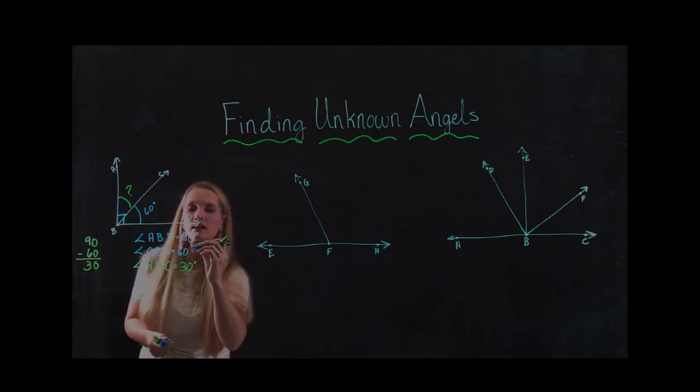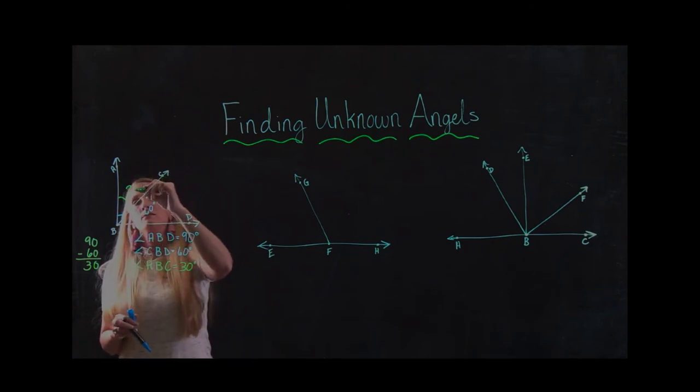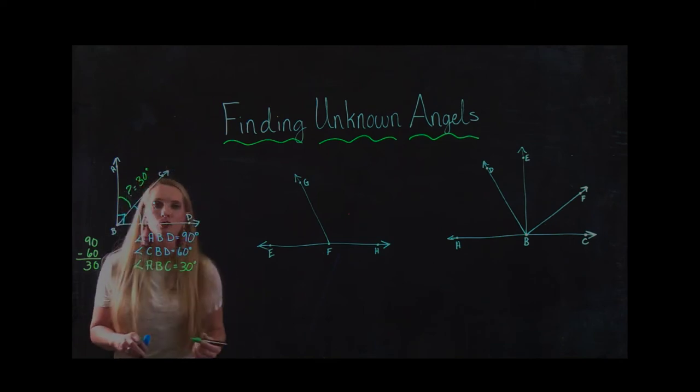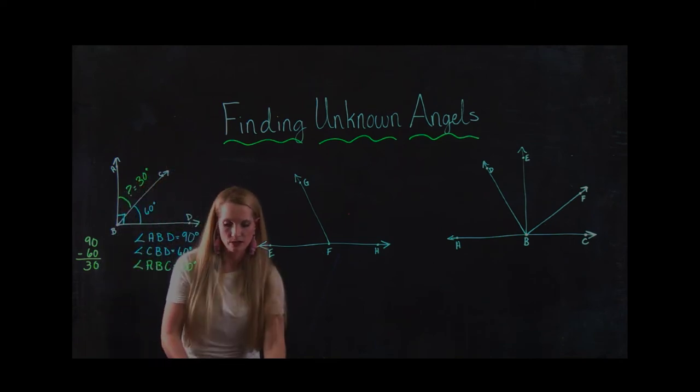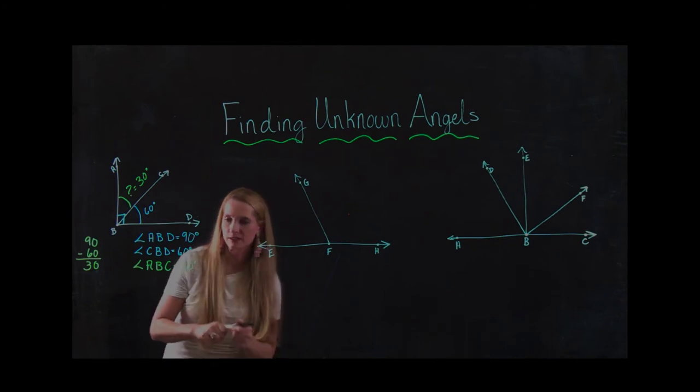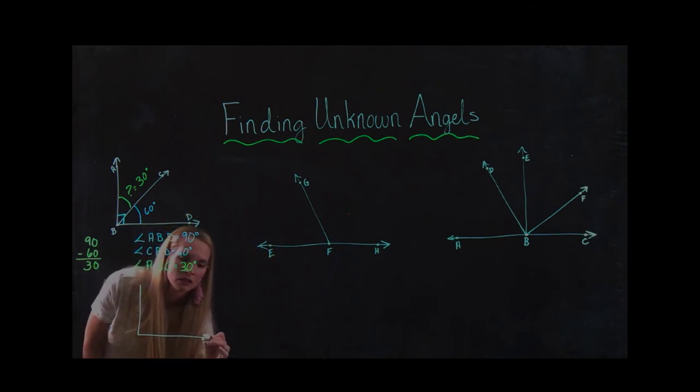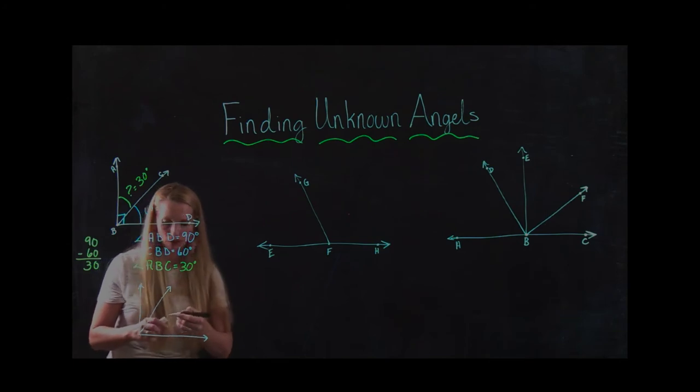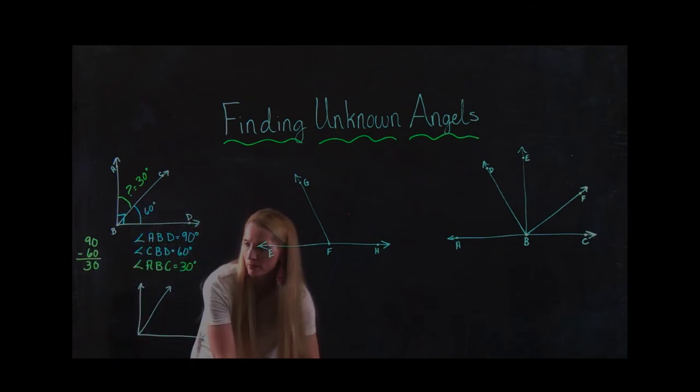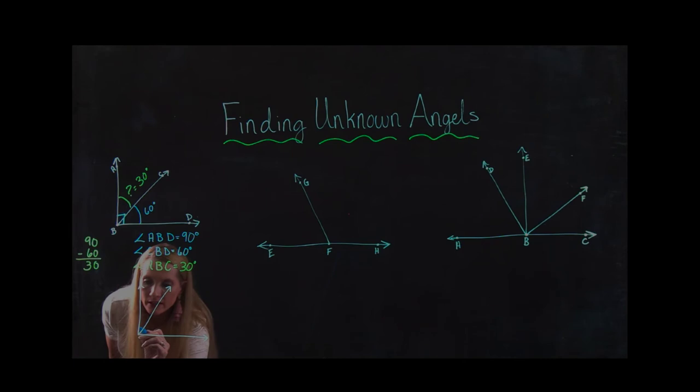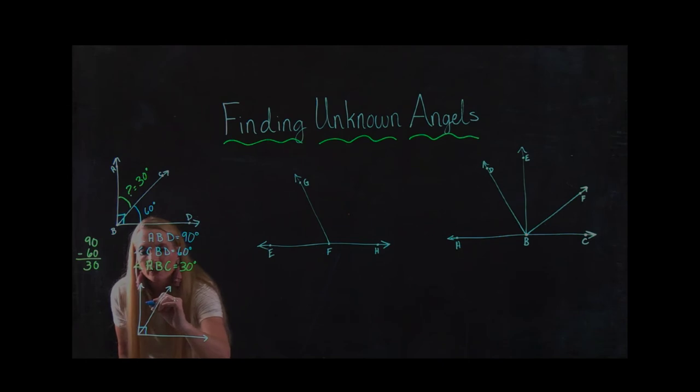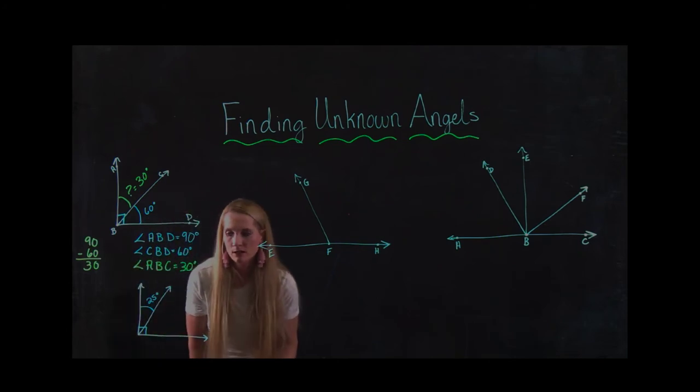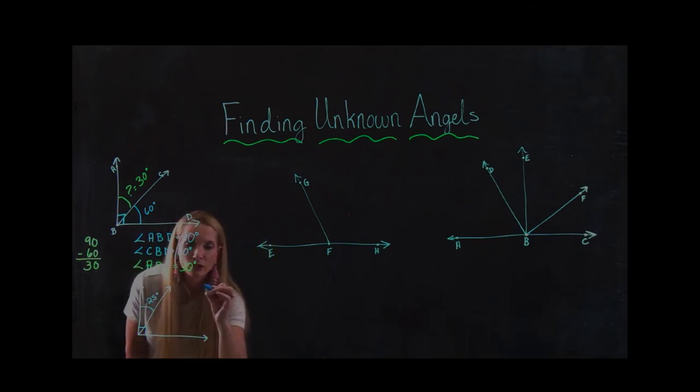So I know that ABC is equal to 30 degrees. I forgot my degree sign there on the 60. So I know that my question mark equals 30 degrees. So if I wanted to look at another one, I could say, here's my angle. So now I can see it's a 90 degree turn again.